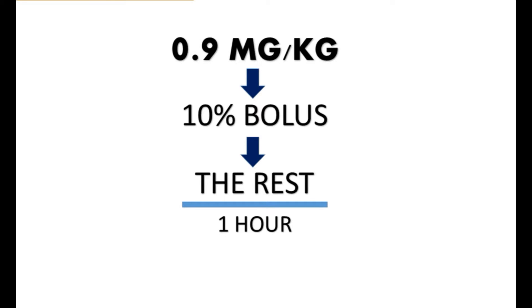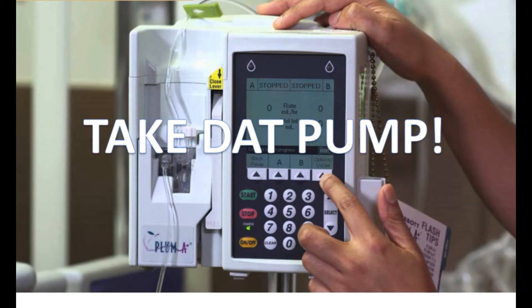Some patients may meet the 4.5-hour criteria, however it has not been FDA approved. For dosing, we give 0.9 milligrams per kilogram — 10% of that dose is given as a bolus over one minute, and the rest is given over one hour. Because this is dosed so carefully, we want to take the pump with us. We don't want to be switching IV sets and wasting drug. We want to ensure the patient gets every bit of the drug, so we take the facility's pump — we are not switching this over to our pump.